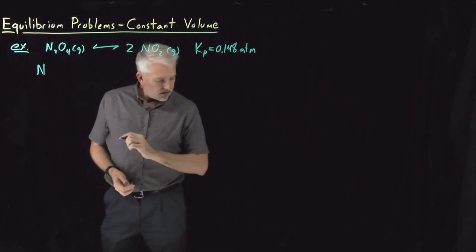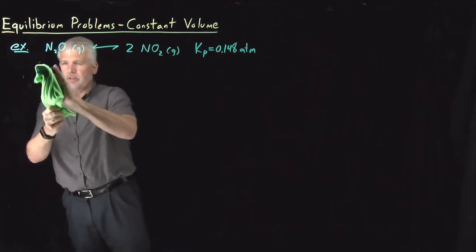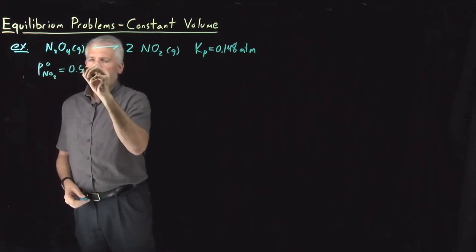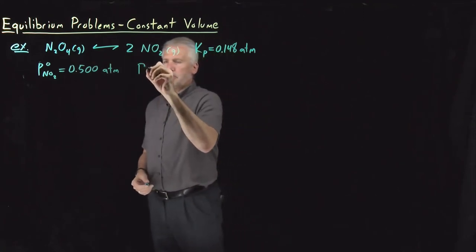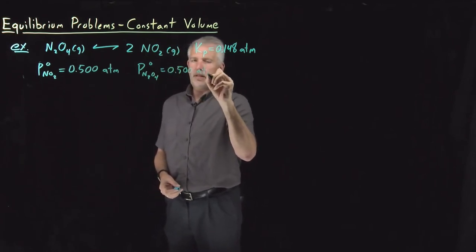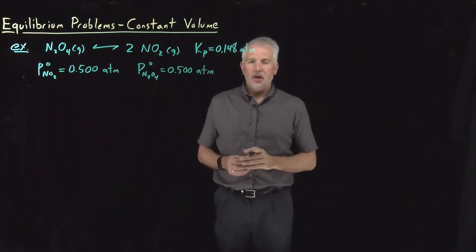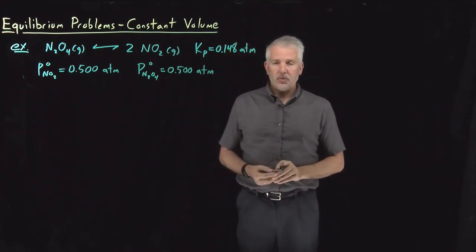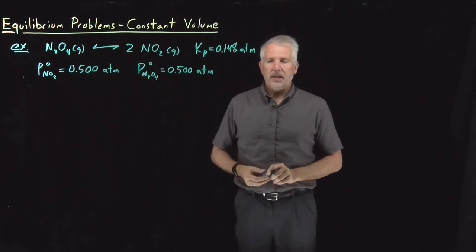So initially, let's say we have half and half NO2 and N2O4. So I fill a box with some NO2 and some N2O4. Total pressure is one atmosphere. So half an atmosphere is the NO2 and half an atmosphere is the N2O4. Those are my initial conditions. The question is, once that reaches equilibrium, what will those pressures equal once this reaction reaches equilibrium?